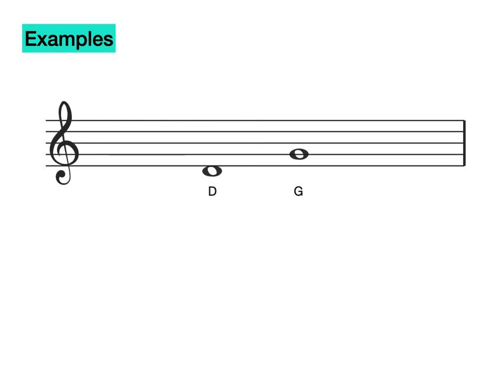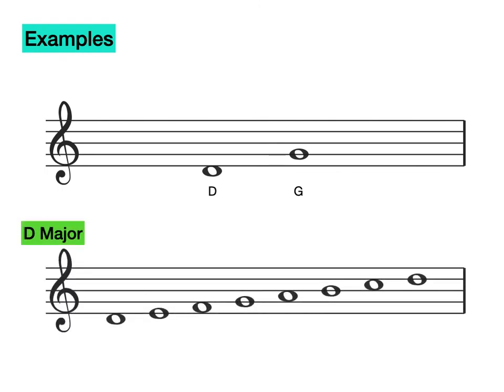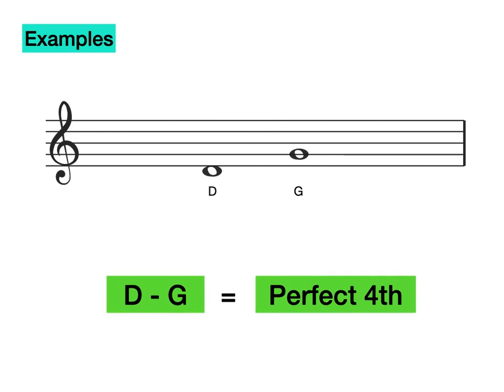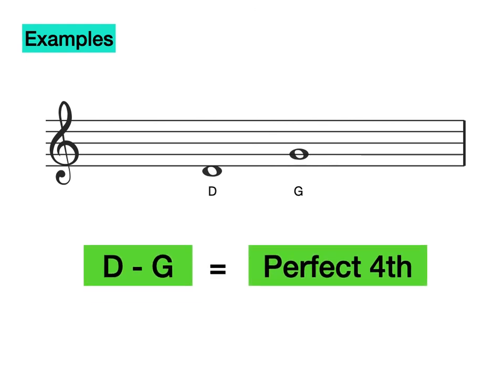What about this interval? We have a D natural and a G natural. Is G natural in D major? Let's write out the scale and see. G natural is in D major, and because the interval is a fourth, this is a perfect fourth.